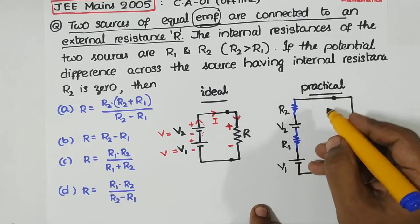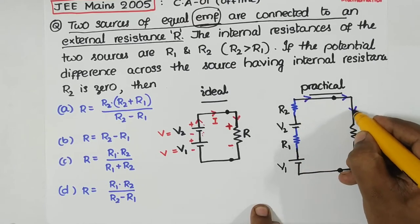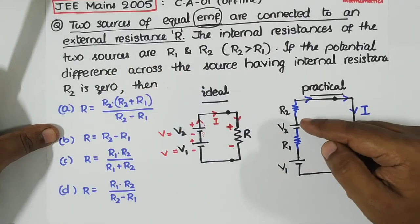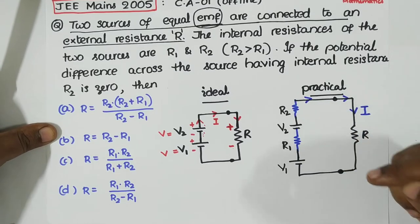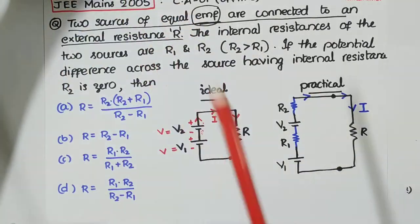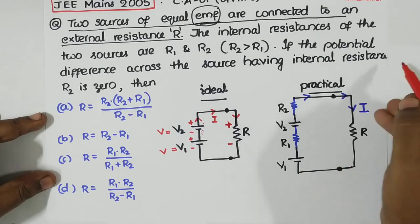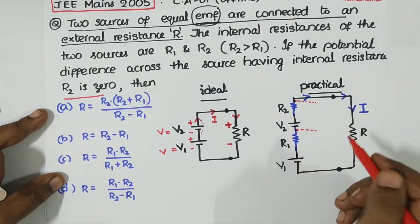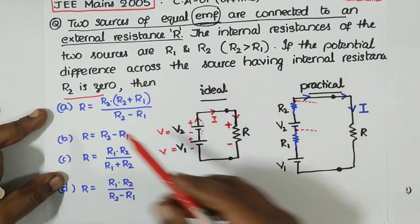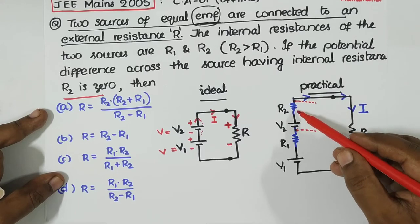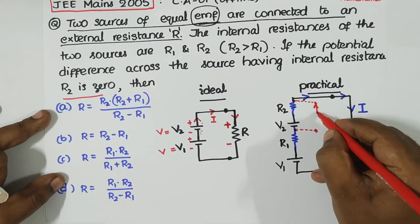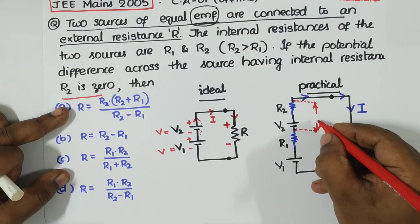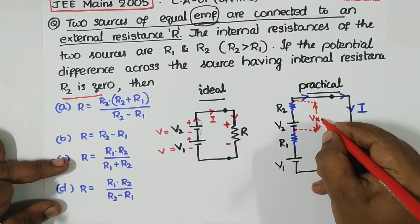As these are sources, current comes out of the positive terminal and flows through the circuit as current I. The potential difference across source V2 along with R2 is VX, and that equals 0. So I can write: the potential difference across this combination — V2 minus the drop across R2 — is VX equals 0. Let VX = 0.